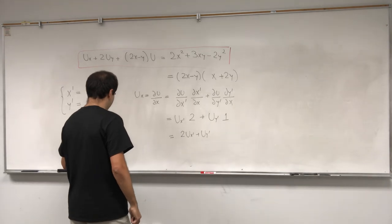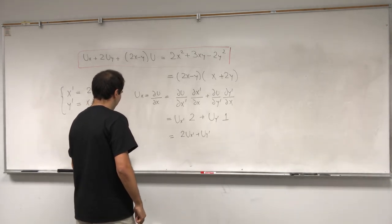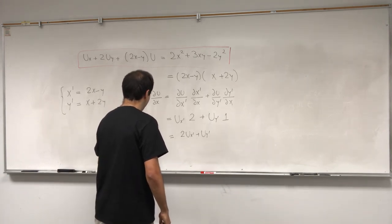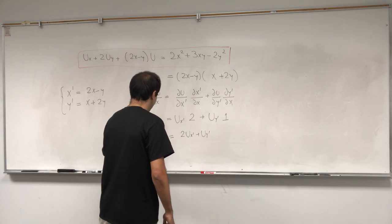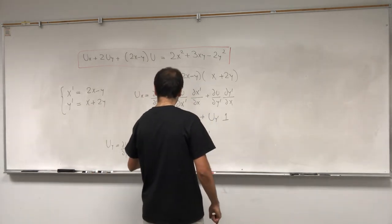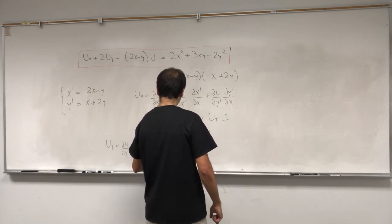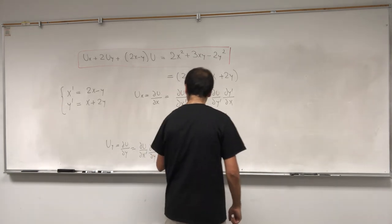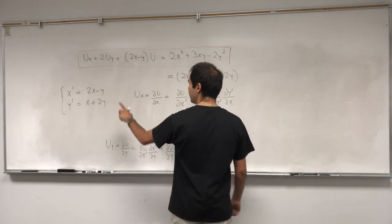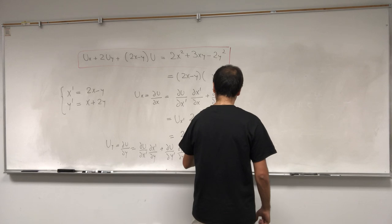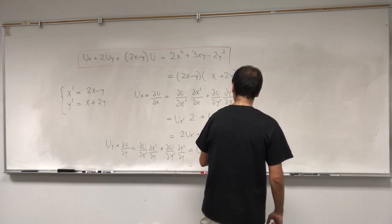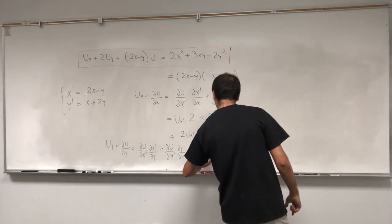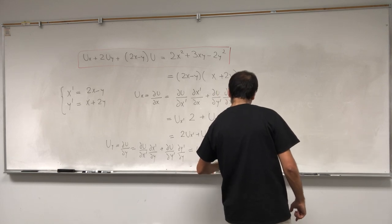On the other hand, uy — that's partial u over partial y. That's partial u over partial x prime, times partial x prime over partial y, plus partial u over partial y prime, times partial y prime over partial y. So we get ux prime times (dx prime over dy, which is minus 1), plus uy prime times (dy prime over dy, which is 2). So we get minus ux prime plus 2 uy prime.